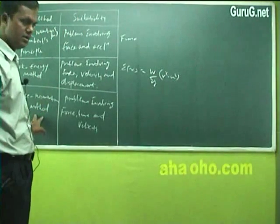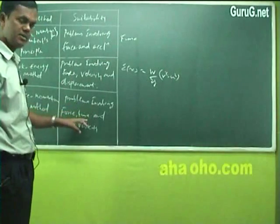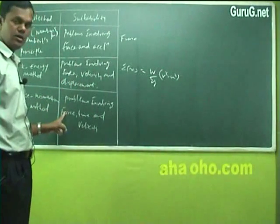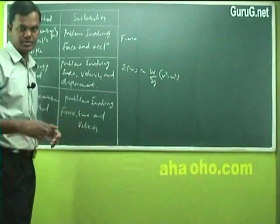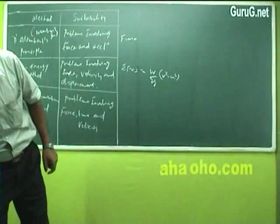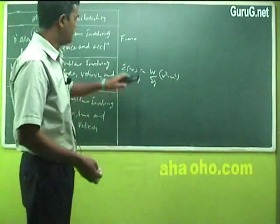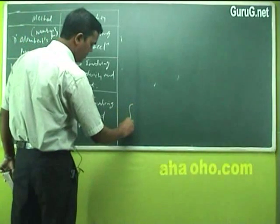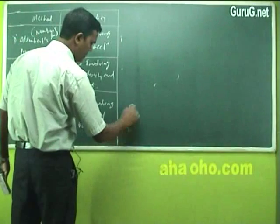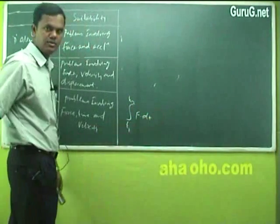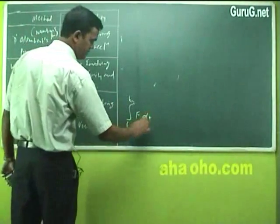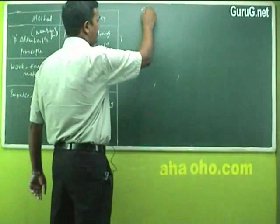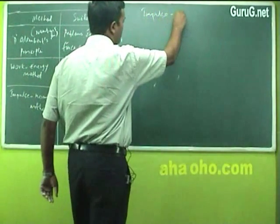The third method is the impulse momentum method, which you are going to see now. Impulse momentum method is used for problems involving force, time, and velocity. The formula involves F into T — force into time. Within two time periods T1 and T2, you are finding out the time.